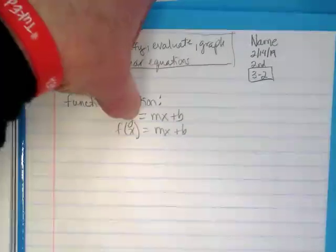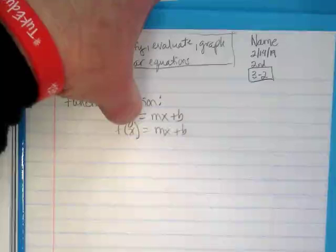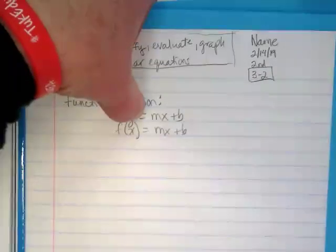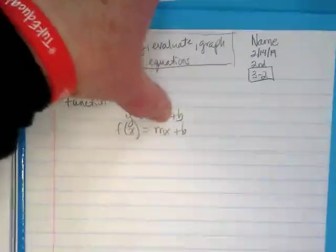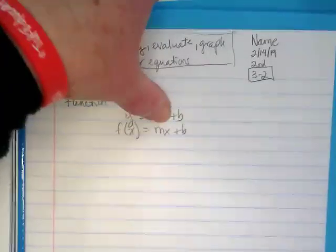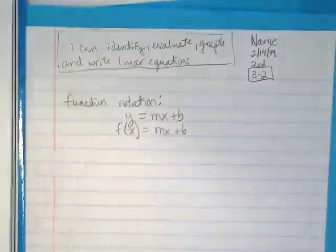But this is a shorthand version of an input-output table where we put in for the x what our input is. We put it in to where the x is in this equation, and then we can solve it and find out what our output would be.